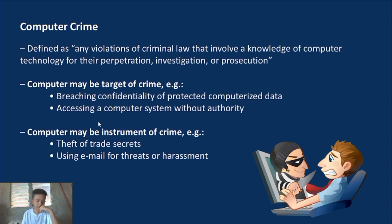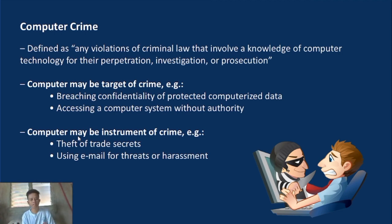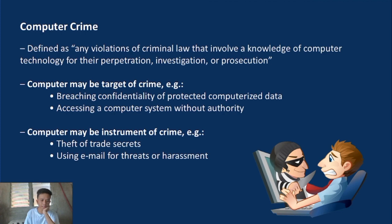In the second category — using the computer as an instrument to commit a crime — first is the theft of trade secrets: confidential, private information that is stolen. Second is using email for threats or harassment — sending emails such as Gmail messages containing threats, or compelling someone to provide information.